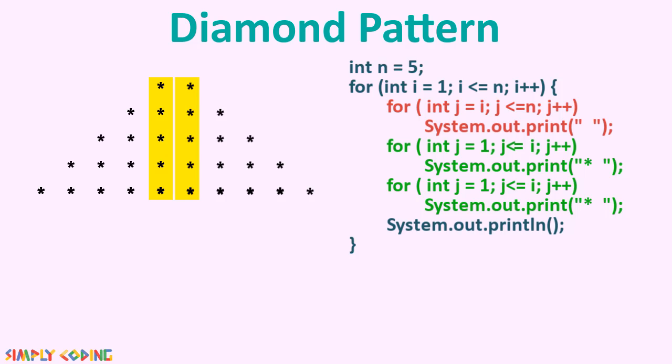So the only change we need to do is remove 'equal to' from the for loop of the first star triangle, so that it prints one less column. Now when you run it, it's displayed correctly.